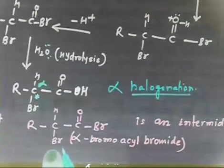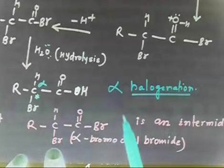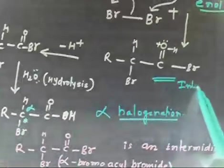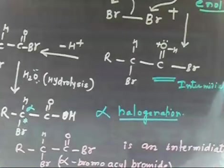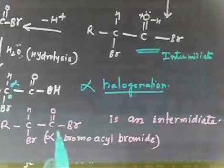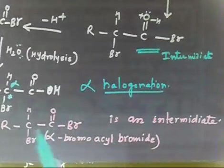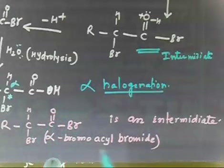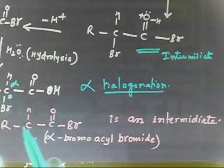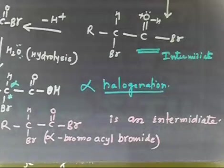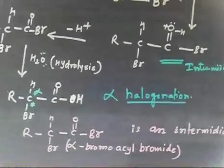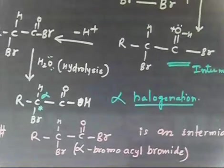The intermediate in this reaction is called alpha-bromoacyl bromide. At the alpha position you have a bromo group, and the acyl group is -COBr, so it is alpha-bromoacyl bromide. This intermediate is key — you don't need to memorize the name, just know there is an intermediate of this form.